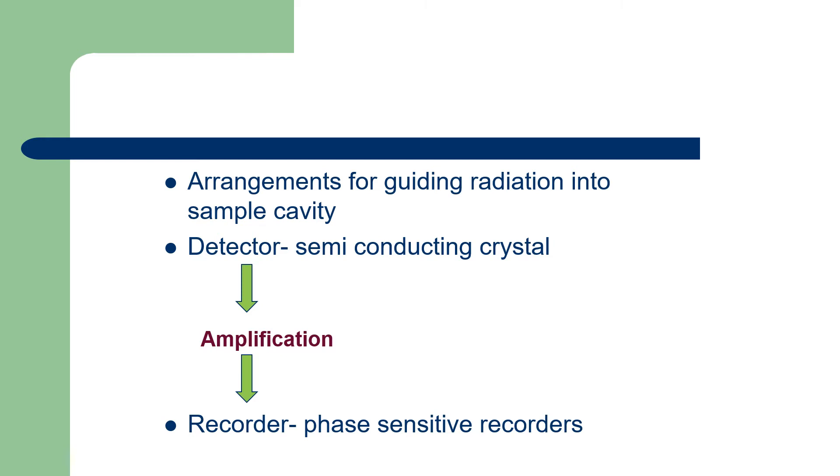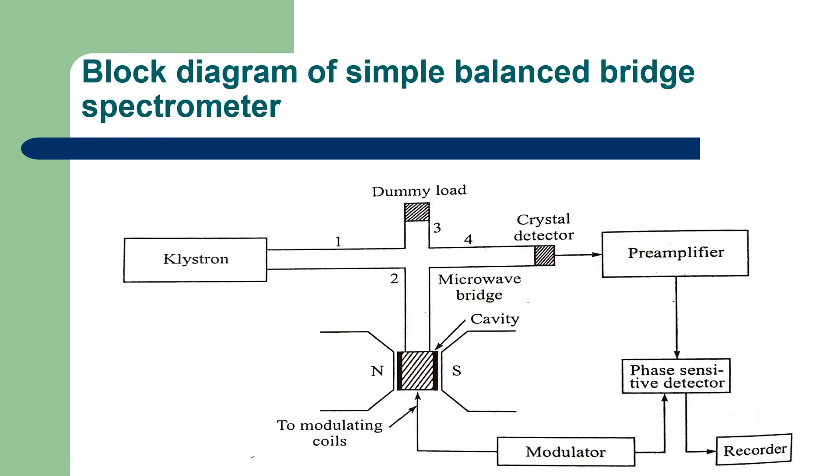Phase sensitive recorders are normally used in this ESR spectrometer. The block diagram of simple balanced bridge spectrometer is shown in the figure. Here we can see our source, klystron, then the electromagnet with pole pieces N and S, then a microwave bridge, then a preamplifier, then phase sensitive detector, then modulator and recorder.